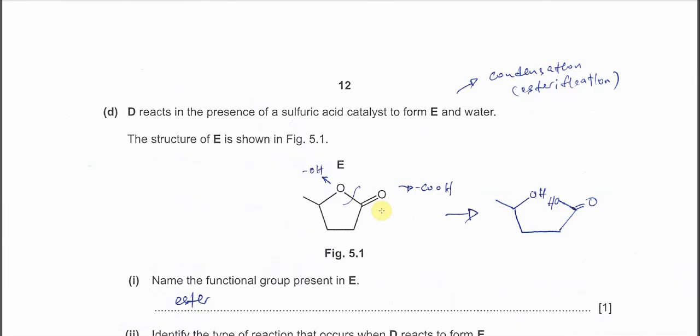Okay, another compound D reacts in the presence of sulfuric acid to form E and water. So this one we roughly know that it's going to be a condensation or esterification because water formation. And the structure of E, means the product, is shown in this figure 5.1. Here we know that this is a cyclic ester. So we add the acid together. Then it will self-react and form the cyclic.